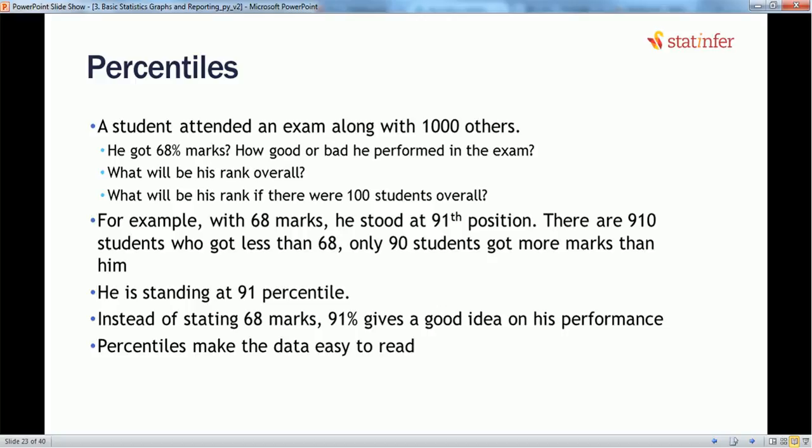Imagine there are 1000 students in a class and we'll consider one student. They've taken an exam and one student out of 1000 scored 68% marks. Can we say he performed good or not? Not necessarily, because we need to find a relative scale out of 1000 students and compare that person's rank out of 1000 people.